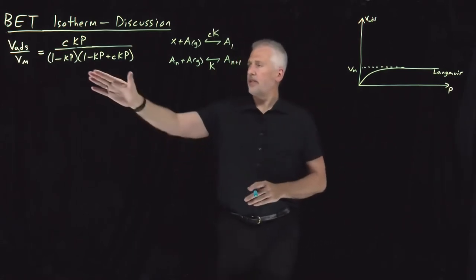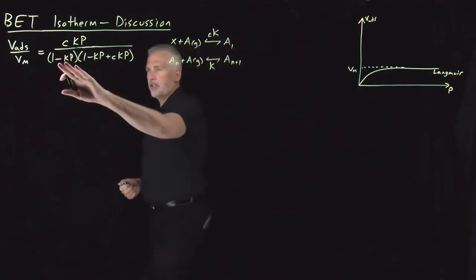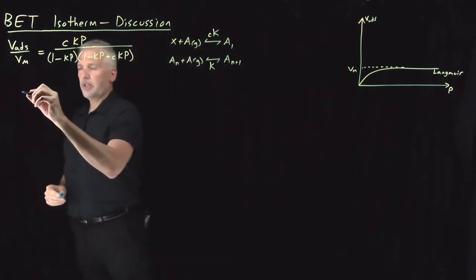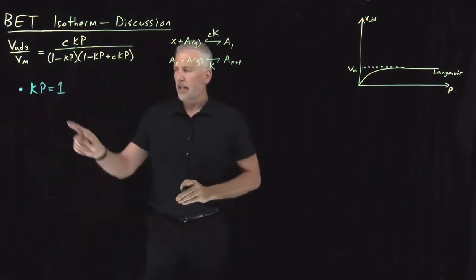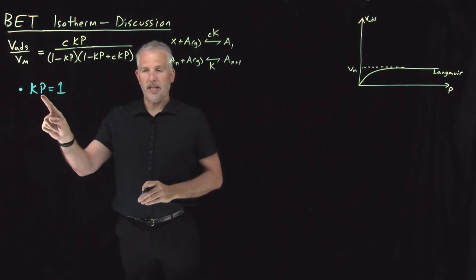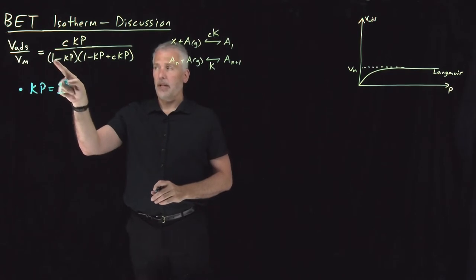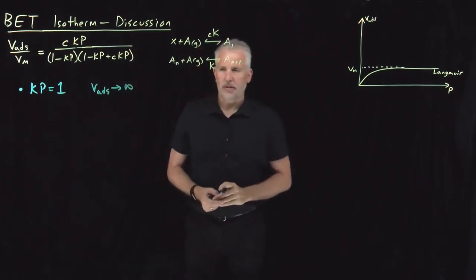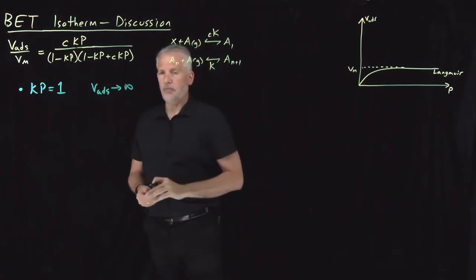Looking at this expression, the first thing that jumps out is the quantities in the denominator that might cause it to blow up. In particular, if Kp equals 1—the equilibrium constant is some number, but if the pressure causes K times P to equal 1—then the denominator will be 0 and the adsorbed volume approaches infinity. So what does that mean? Is it a problem with the model, or what does it mean for the adsorbed volume to reach infinity?